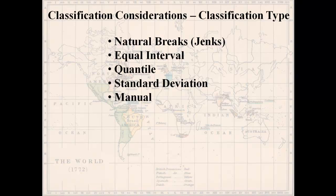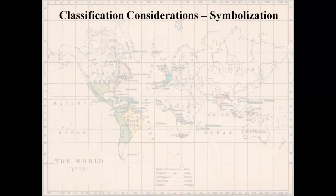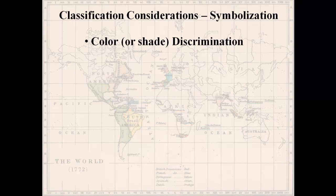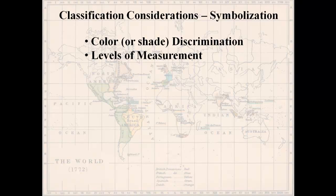You also need to think about symbolization — how do you symbolize choropleth maps? Color and shade are important. Remember there are colorblind people, or your map might be copied in black and white, so keep that in mind. I'll talk more about color in the next video. Also keep in mind your levels of measurement. For ratio-level data — where you can do addition, subtraction, multiplication, and division — you generally want symbols that vary from one shade to another, or vary in saturation of a color. You generally don't want to use different colors, though there is an exception I'll show shortly.